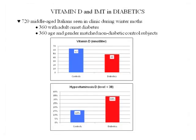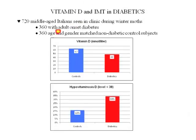This is a study of 720 middle-aged Italians seen in the clinic during the winter months. We get vitamin D from the sun, so levels are lower in winter — one of the reasons we have more infections and more heart attacks in winter. We look at 360 with adult-onset type 2 diabetes and 360 age- and gender-matched non-diabetics. Diabetics have lower vitamin D levels than non-diabetics. Hypovitaminosis D — defined at below 38 — was present in a third of the diabetics versus only a smaller percentage of the controls. Low vitamin D is associated with diabetes.